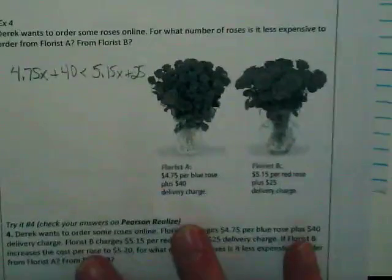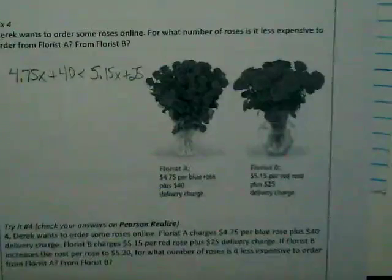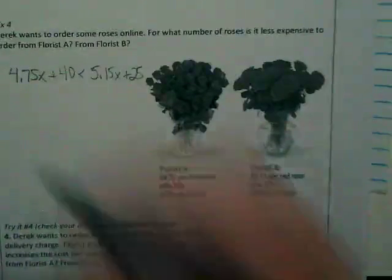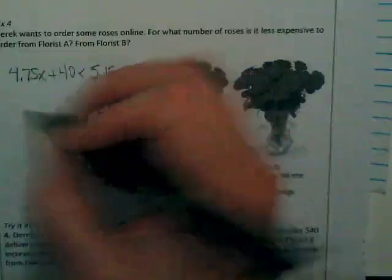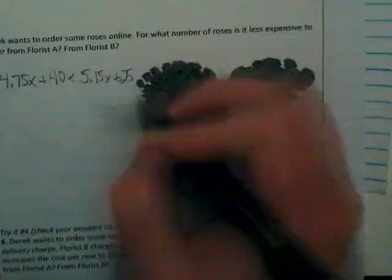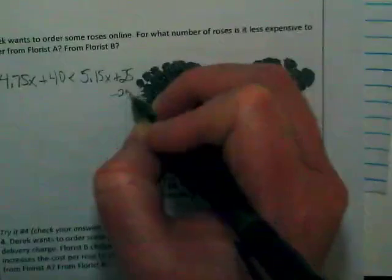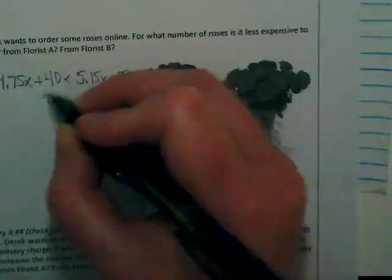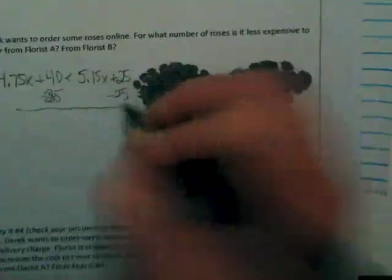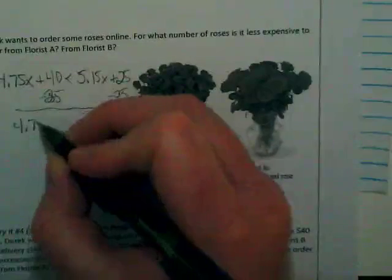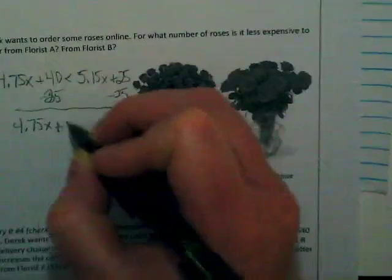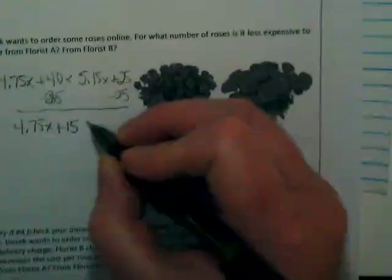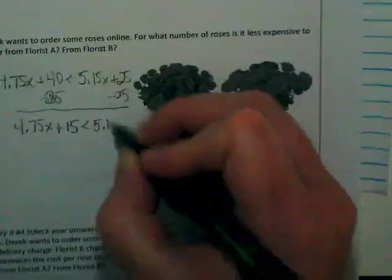And then we're going to simplify that. I'm going to subtract the 25 first. So we end up with 4.75X plus 15 is less than 5.15X.